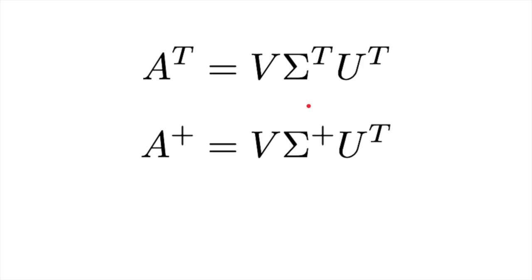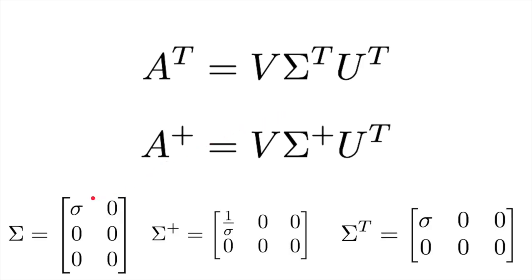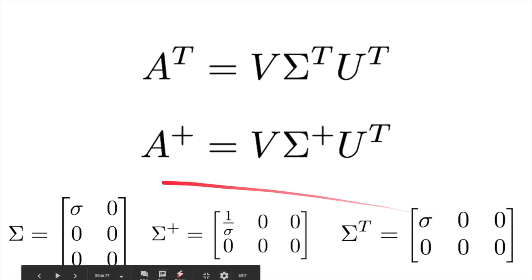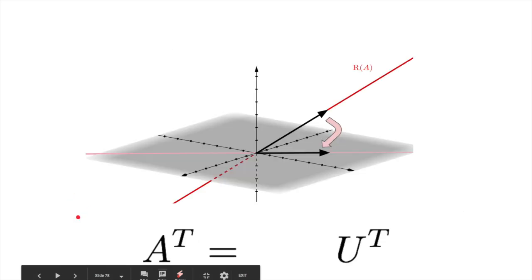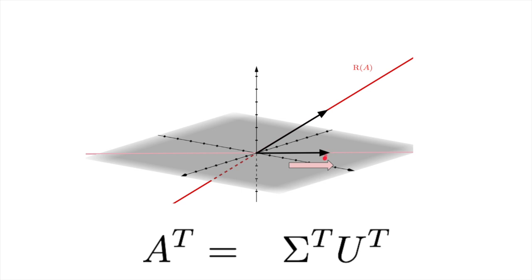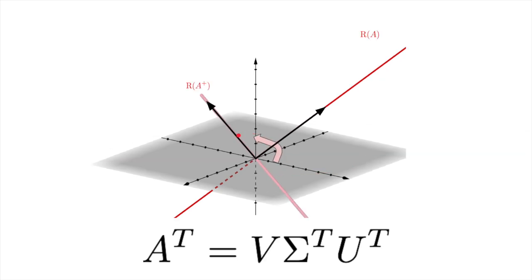Remember that in the pseudo-inverse, the sigma matrix undoes the stretching of A. However, the transpose performs the exact same stretching as A, and has the same sigma value. Okay, let's go back to the geometry to get a feel for what A transpose looks like. First, we multiply a vector by U transpose. It's the same reverse rotation as in the pseudo-inverse. Then, we stretch it by the same amount that we stretched the original vector, because the singular value is the same. Finally, we rotate the stretched vector back to the original line with the matrix V. This is the same as in the pseudo-inverse.